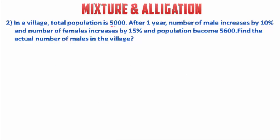Now the second question. In a village, the total population is 5000. After 1 year, the number of males increases by 10% and the number of females increases by 15%, and the population becomes 5600. Find the actual number of males in the village.